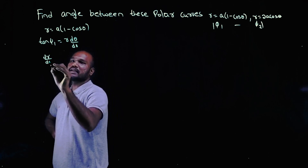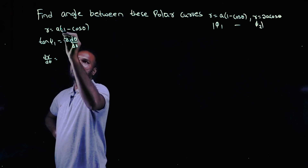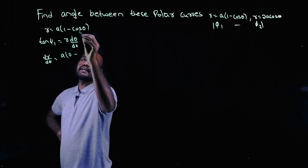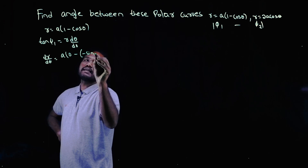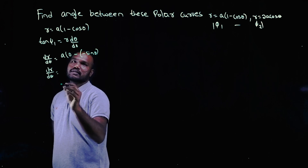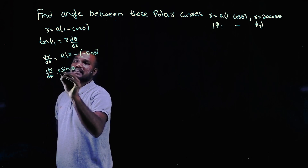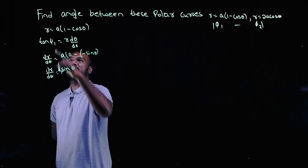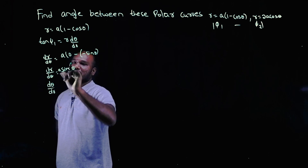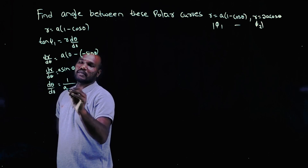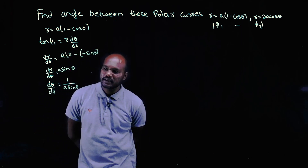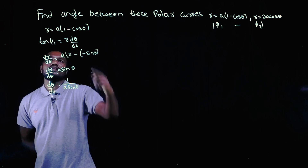Differentiating r with respect to θ: dr/dθ. A is a constant, so the derivative of 1 is 0, and the derivative of -cosθ is +sinθ. So dr/dθ = a sinθ. Since I need dθ/dr, I just reverse this: dθ/dr = 1/(a sinθ).